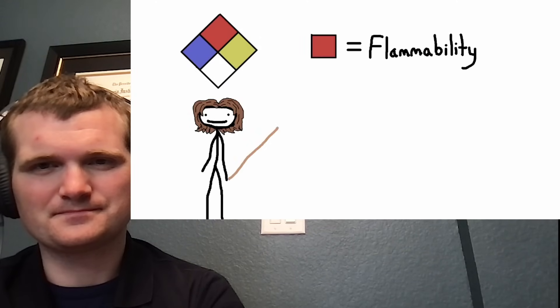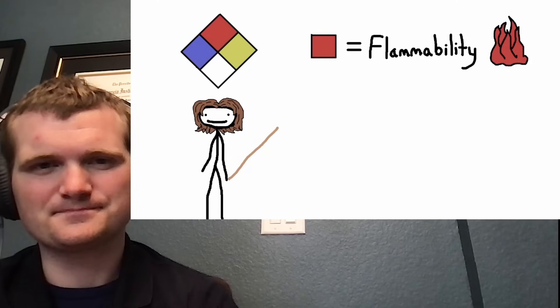So first off, notice the four colors, right? Each one represents a different type of hazard. Red is for flammability because fire and burning things are usually red.